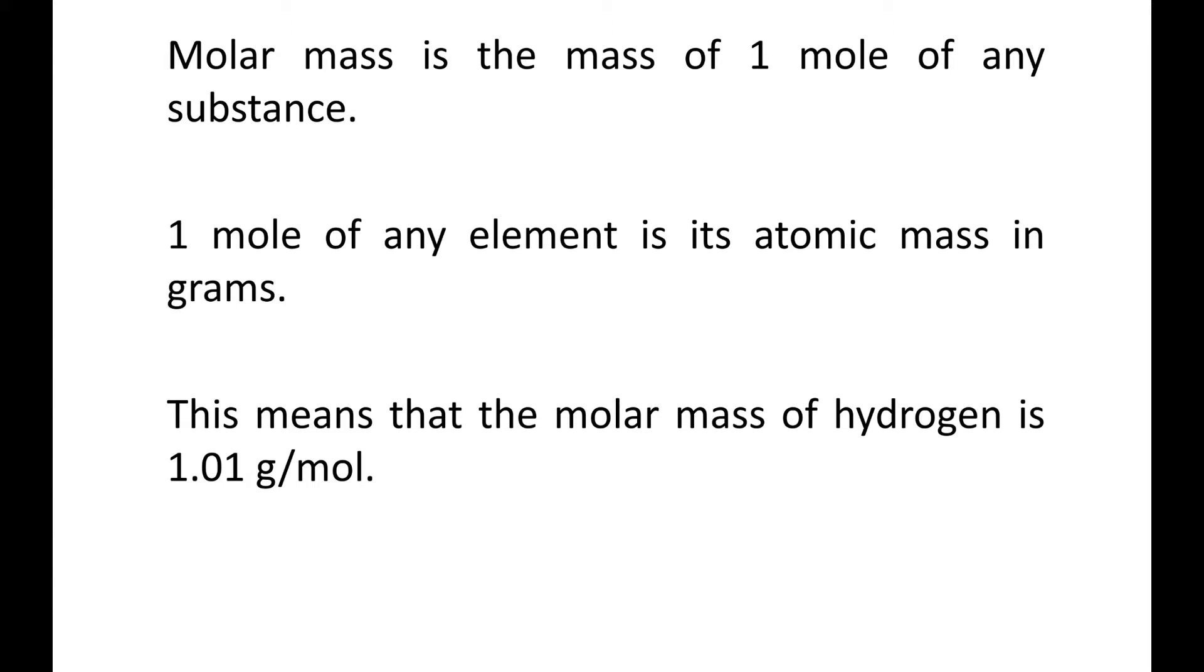Where did I get that number 1.01? If you look on the periodic table, the atomic mass is 1.01 AMU, or atomic mass units. Instead of writing AMU, all you do is replace that AMU with a g. So if you want one mole of hydrogen, it's 1.01 grams per mole. And that's what molar mass of the unit is. It's grams per mole, not just grams, but grams per mole.